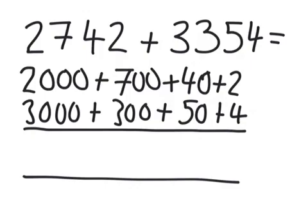So remember, we always start off with the units. It helps us with subtraction. So 4 and 2 is 6. 50 and 40 is 90.